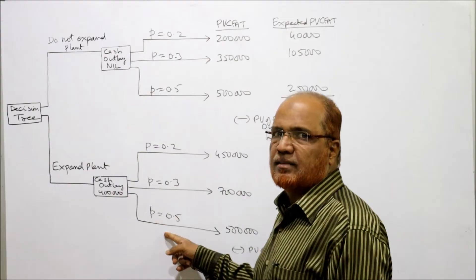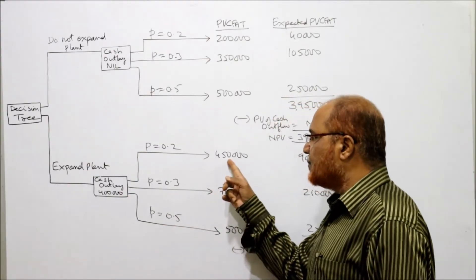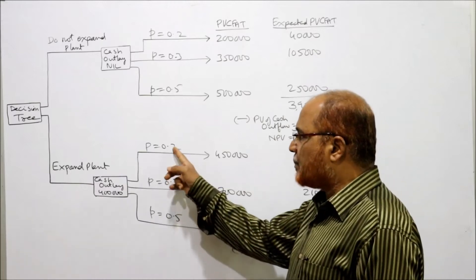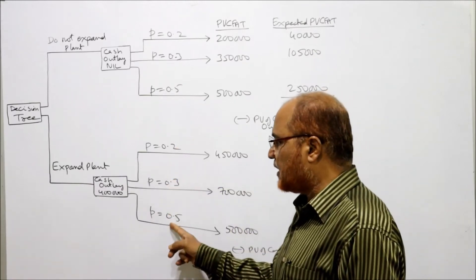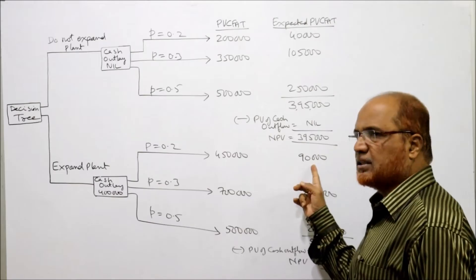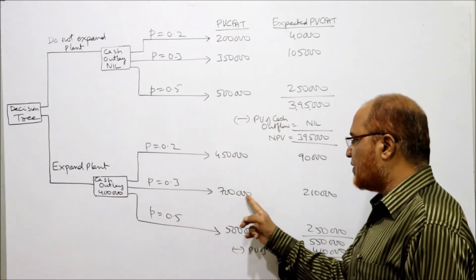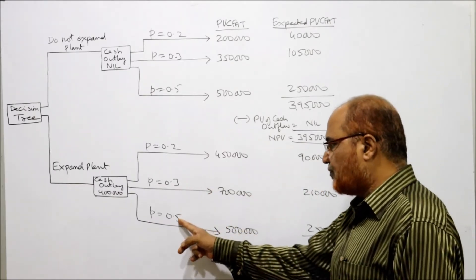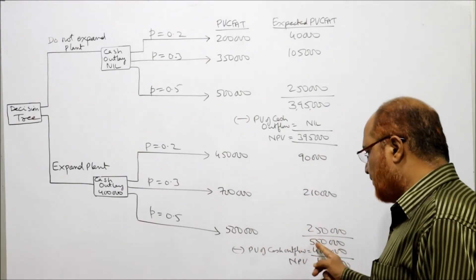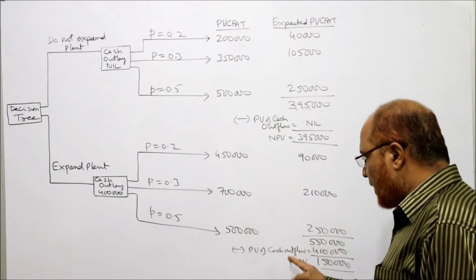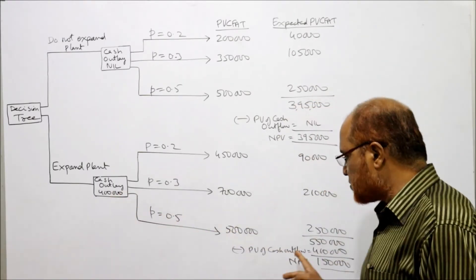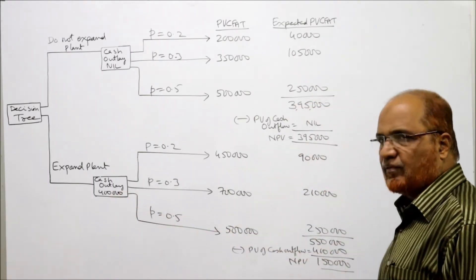For the expand alternative, three consequences are given. The PVCFATs are ₹4 lakh 50,000, ₹7 lakh, and ₹5 lakh. The probabilities are 0.2, 0.3, and 0.5. We multiply: 0.2 × ₹4 lakh 50,000 = ₹90,000. And 0.3 × ₹7 lakh = ₹2 lakh 10,000. And 0.5 × ₹5 lakh = ₹2 lakh 50,000. Total PV of cash inflow is ₹5 lakh 50,000, minus cash outflow of ₹4 lakh, giving NPV of ₹1 lakh 50,000.